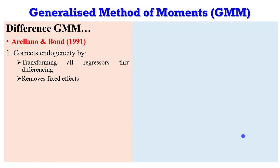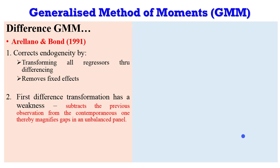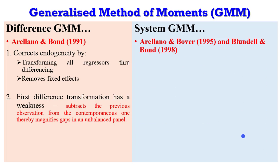Let's talk about difference GMM. It was proposed by Arellano and Bond (1991). Difference GMM corrects endogeneity by transforming all regressors through differencing, and also removes fixed effects in that process. However, this first-difference transformation has a weakness: it subtracts the previous observation from the contemporaneous one, thereby magnifying gaps in any unbalanced panel. So if you have an unbalanced panel, applying difference GMM may weaken your results to some extent.